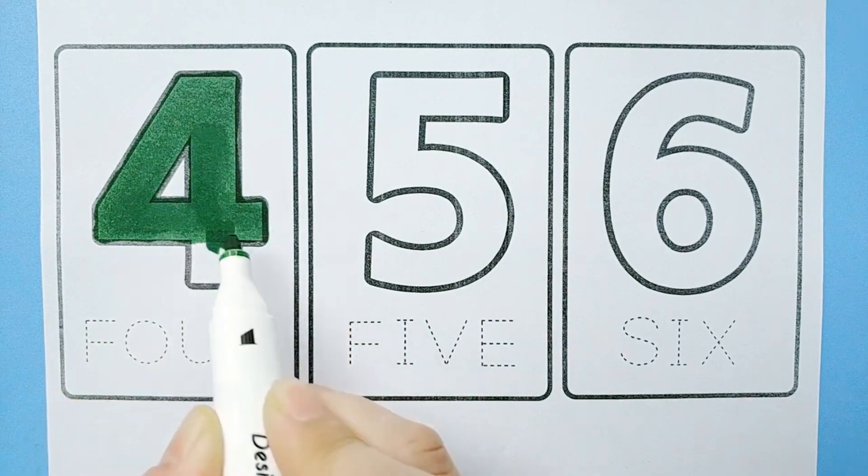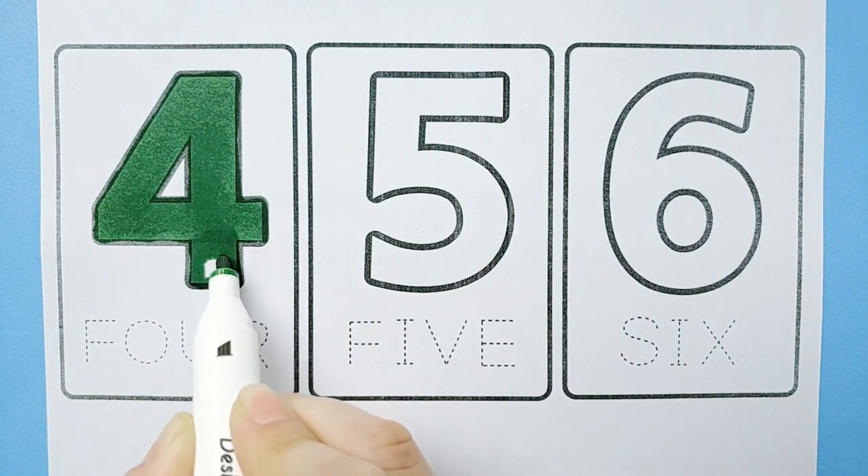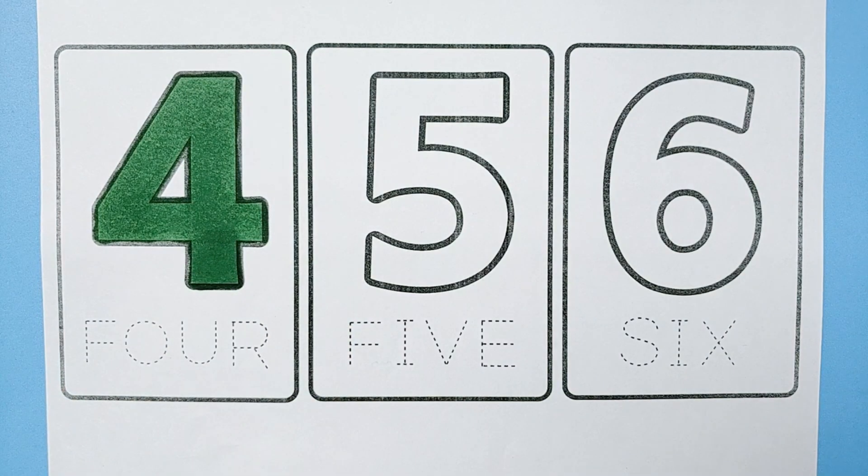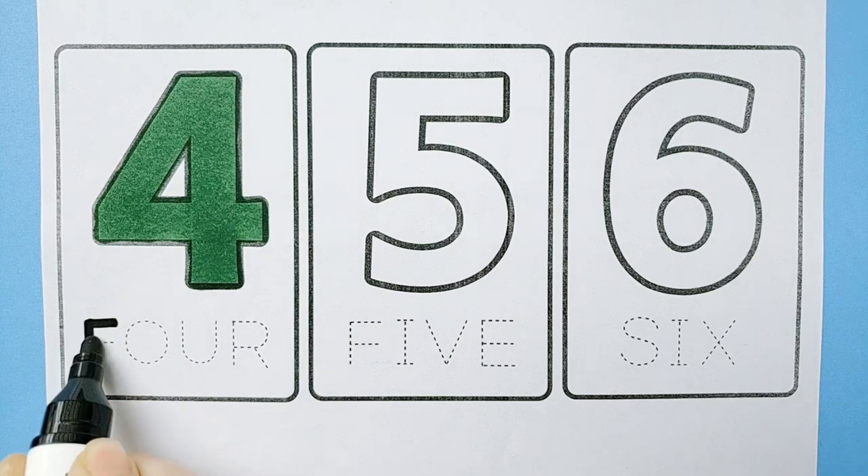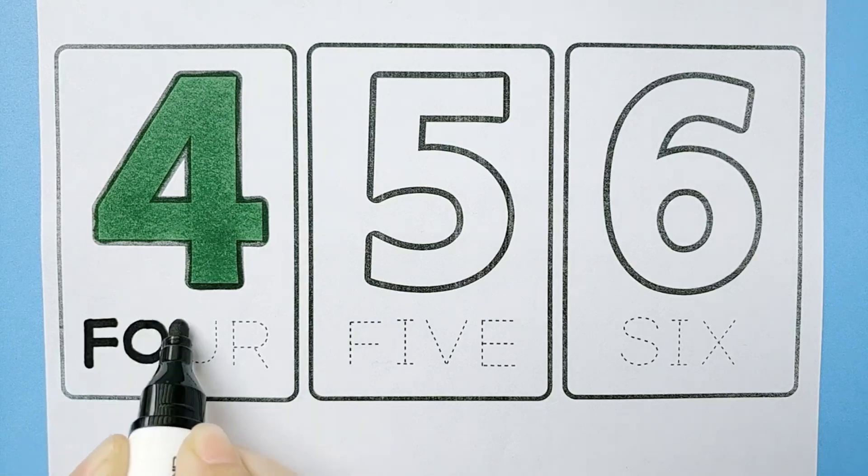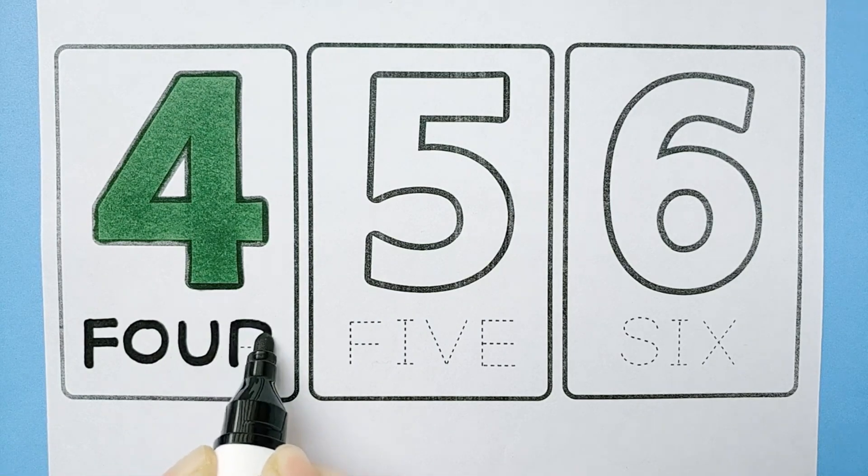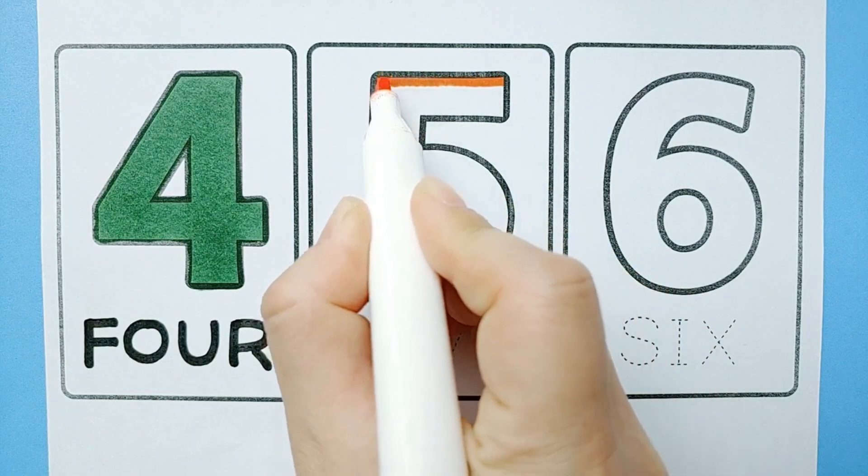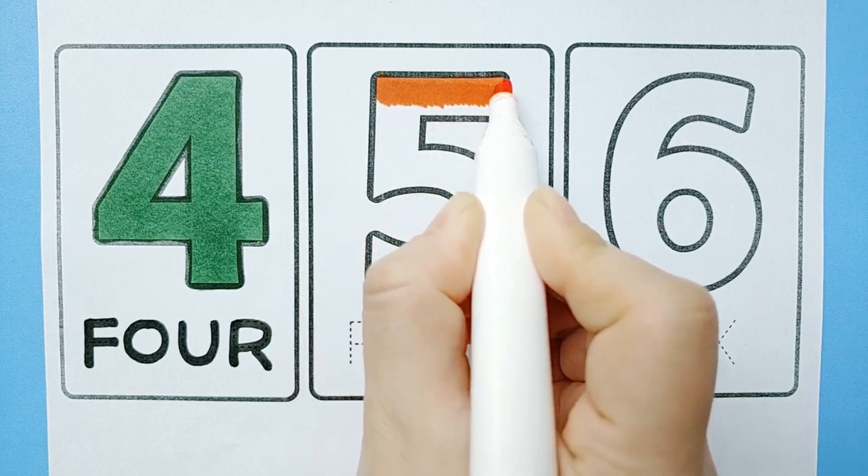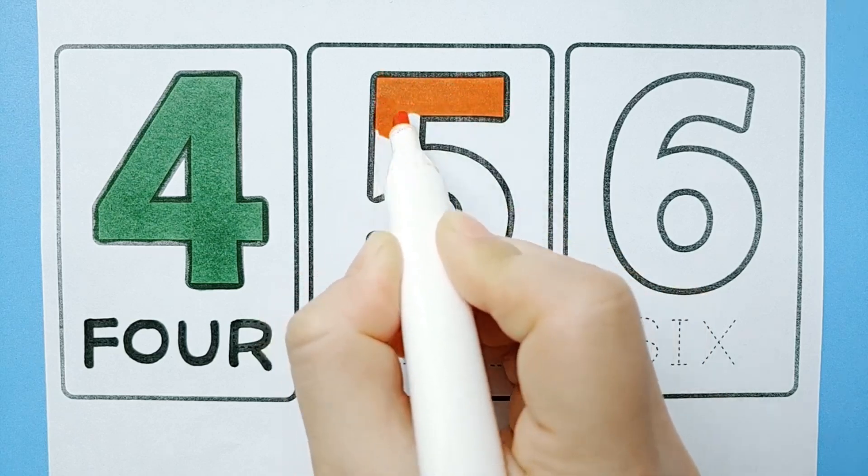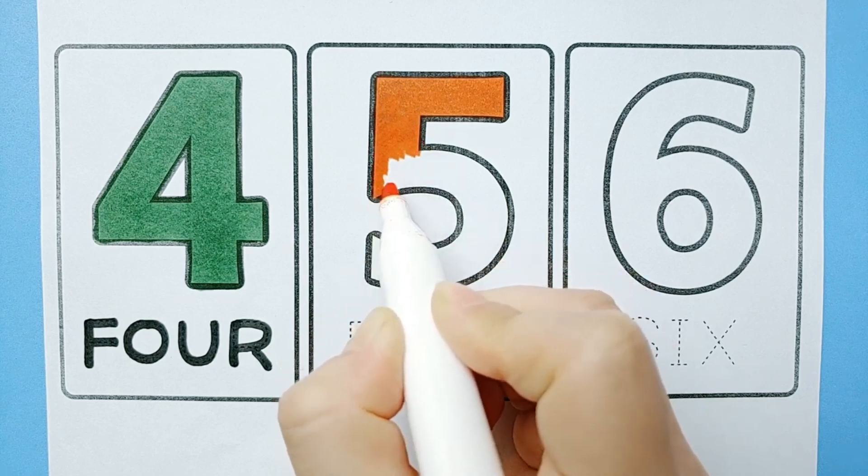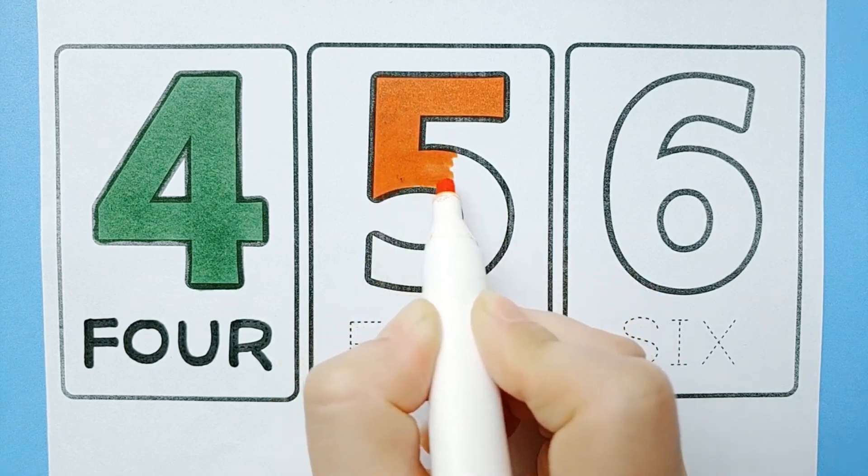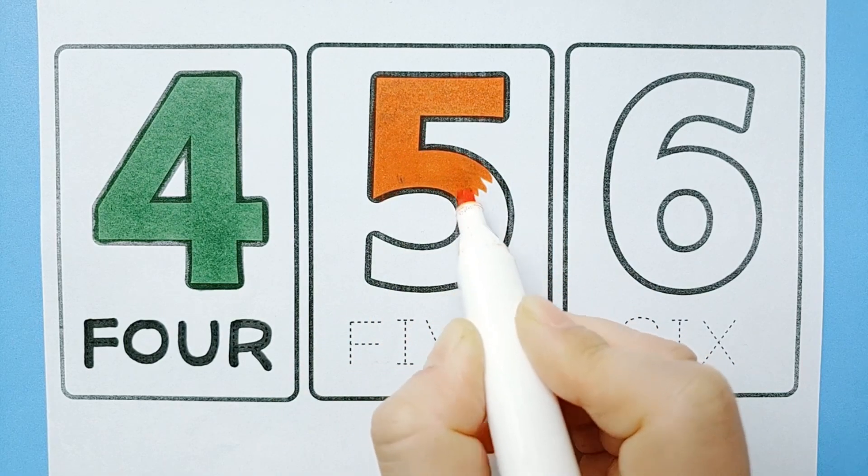T, U, V, W, X, Y, and Z. T, U, V, W, X, Y, and Z. Now I know my ABCs. Next time won't you sing with me? Four. Four. Orange color.